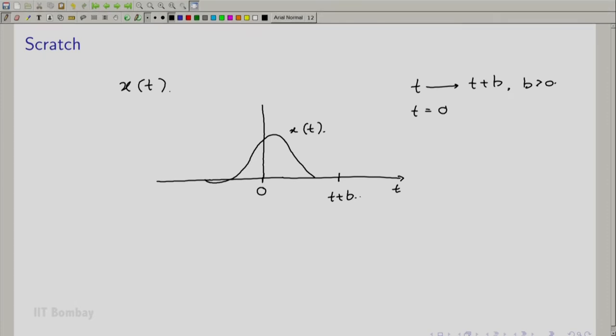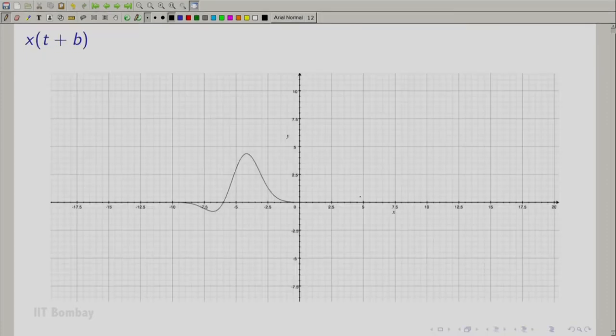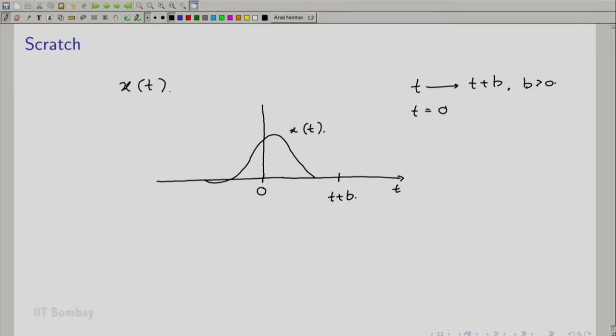So when t is equal to 0, when we plot it on the t + b axis, which is this plot, the previous plot, this t + b value actually gets mapped to the value of 0 and similarly, every value on the t + b axis gets mapped to a value b units to the left of it. Therefore, every value on the t + b axis gets shifted to the left by b units and hence, the plot on the whole also shifts to the left as is shown in the diagram.